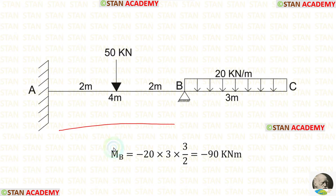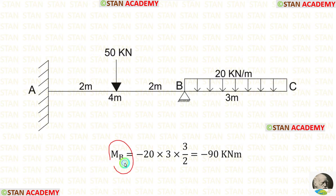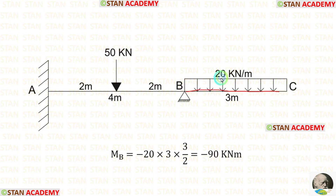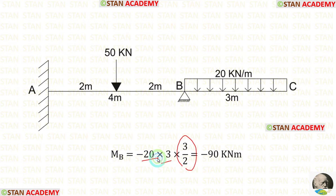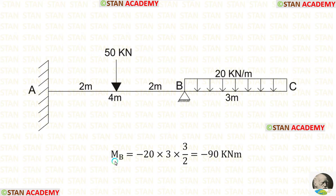In this beam, we can easily calculate MB because after point B there is overhanging. To find MB, we calculate the moment about B from point C. In BC, there is a UDL of 20 kN per meter and the length is 3 meters. We multiply the load with the distance and distance divided by 2, giving MB equal to minus 90 kN·m. In the case of overhanging, we always apply load values as negative.